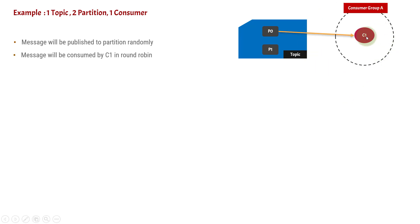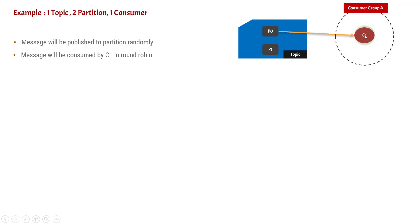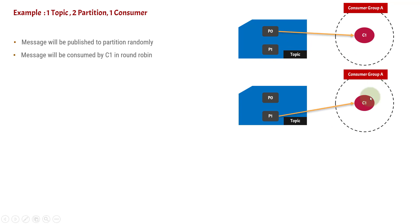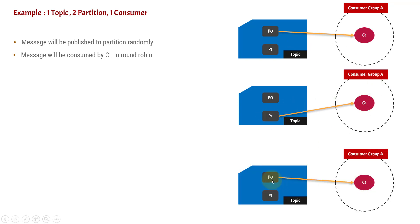The consumer C1, which belongs to consumer group A, will read messages from P0. There is a publisher on the left-hand side which is going to publish messages infinitely as they originate from some source. The publisher will start publishing messages and it can be random — two messages can go to one partition, then the third and fourth to another. But C1 is going to consume messages in a round-robin manner, consuming from both partitions. First it will consume from P0, then P1, then P0 again. If your topic has 10 partitions, the single consumer will read all messages from all those partitions.